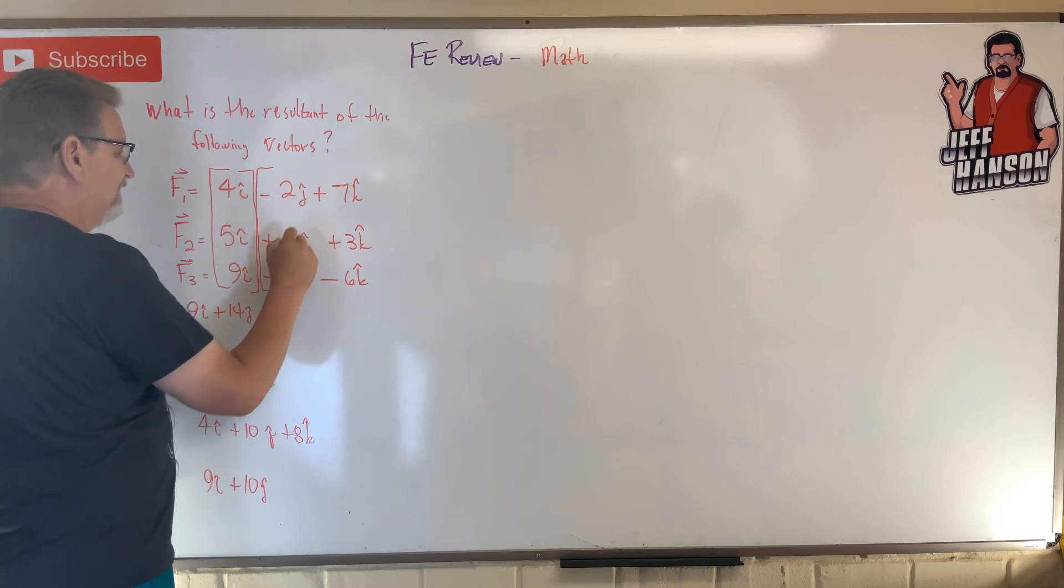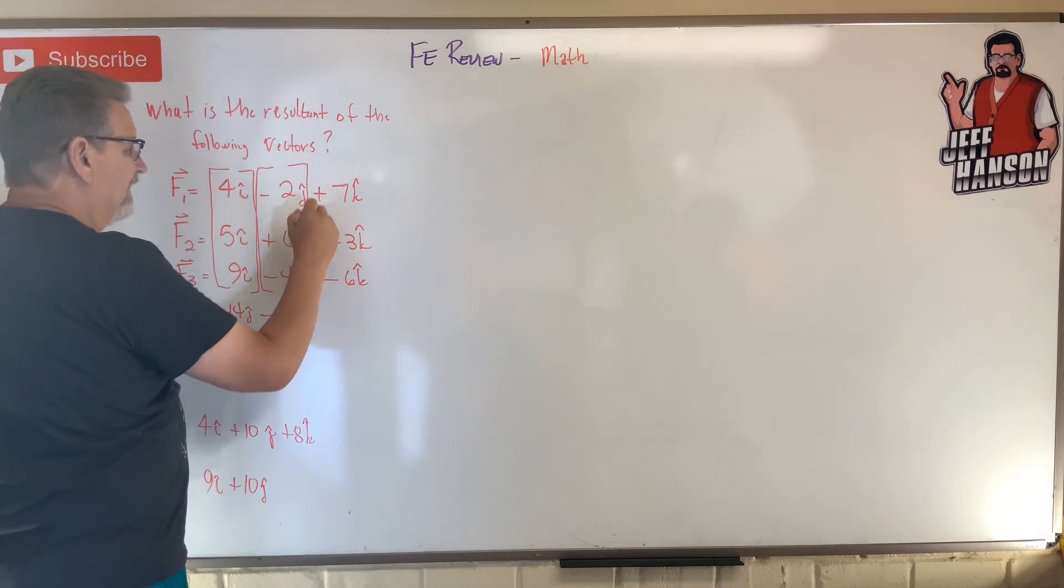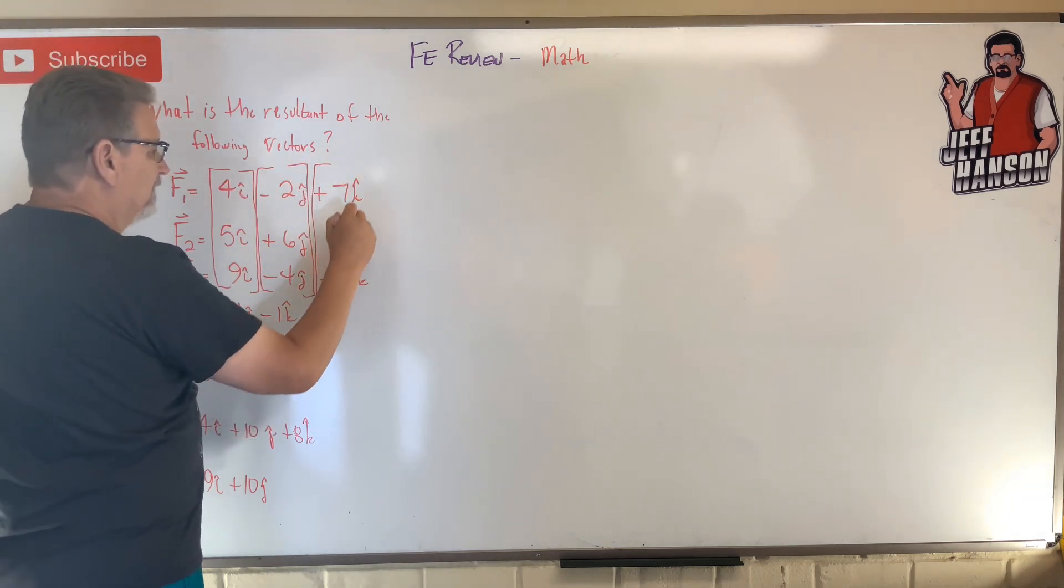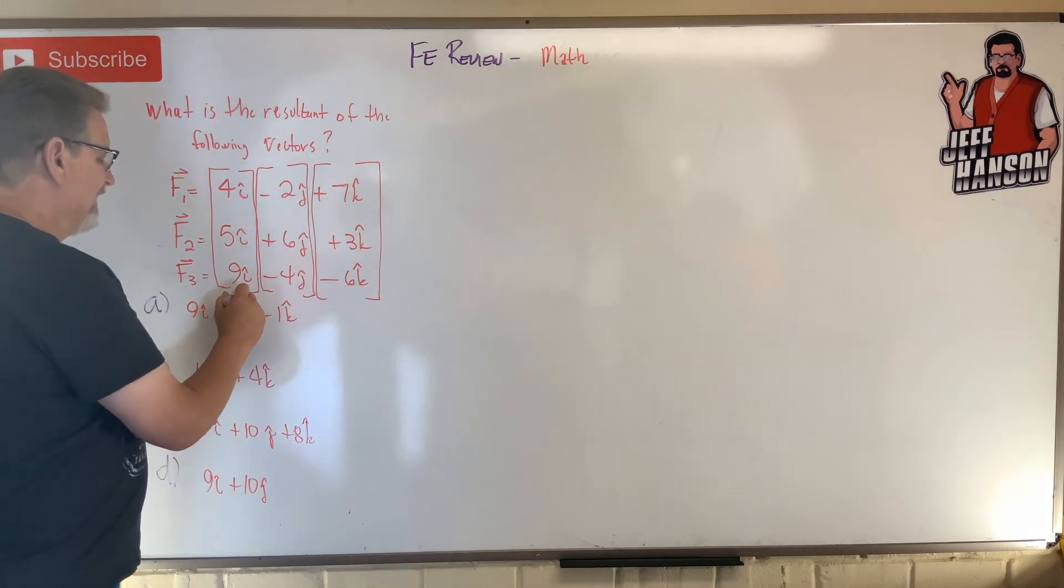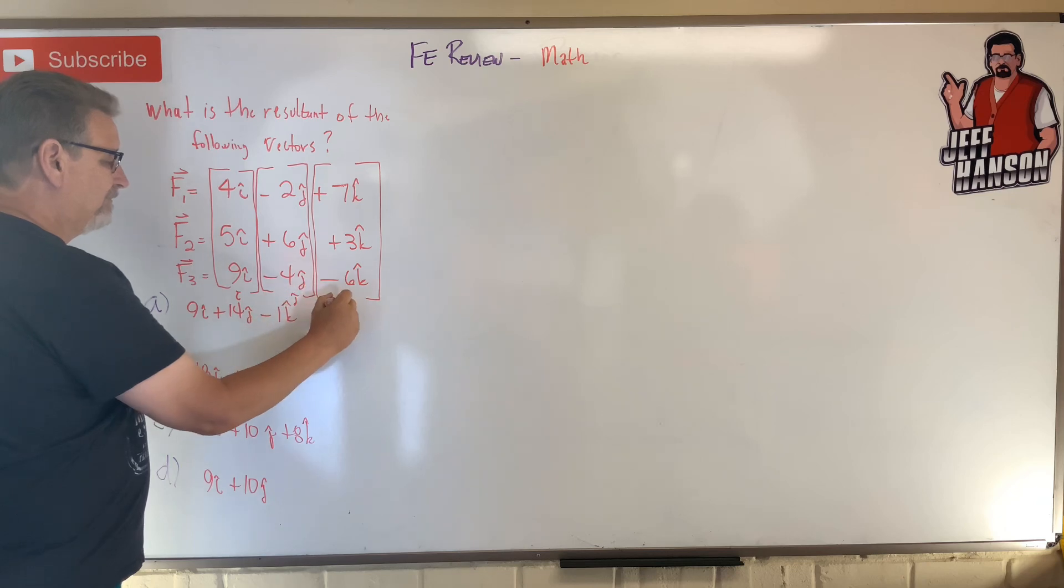Then we're going to add this column together, and then finally we add this column together. And this is going to be our i-hat, this is our j-hat, and that's our k-hat, right?